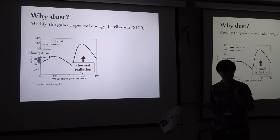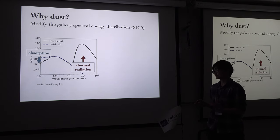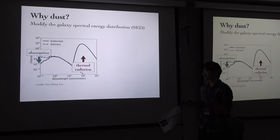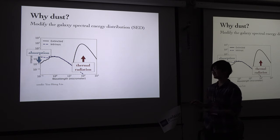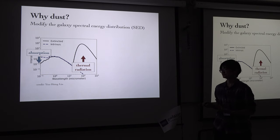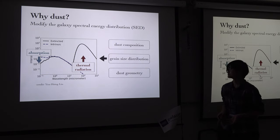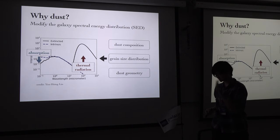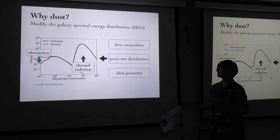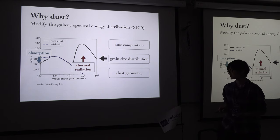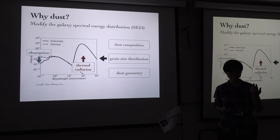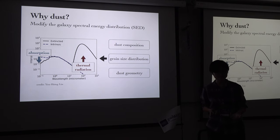There is absorption in the UV and also thermal radiation from the dust in the far-infrared, which will change the SED significantly. These effects are caused by some dust properties, including the dust composition, the grain size distribution, and also the dust geometry.